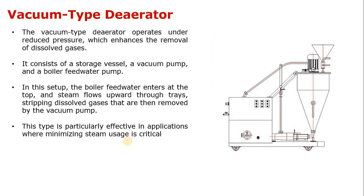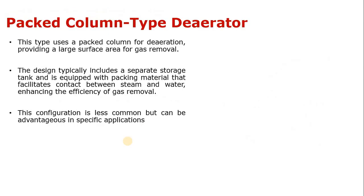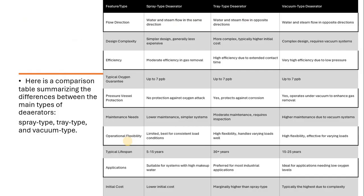There are also vacuum-type de-aerators, which operate under reduced pressure to enhance the removal of dissolved gases — since all de-aerators work at very low pressure. Another type is the packed column de-aerator, which is not as commonly used. A summary of the types of de-aerators is provided which you can pause and note down.